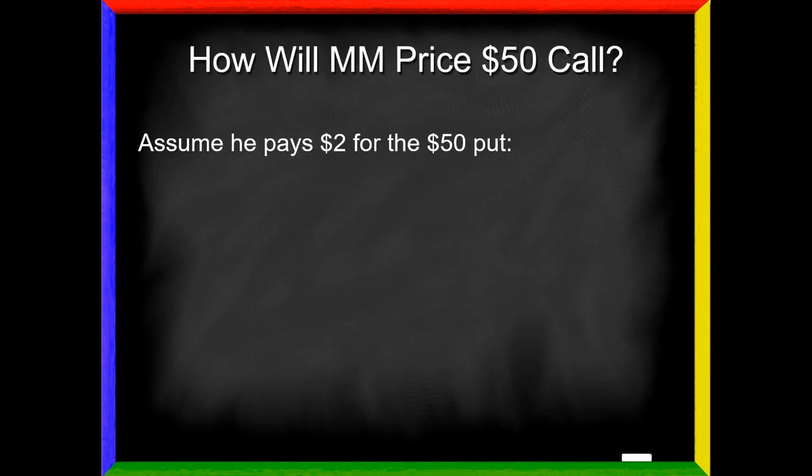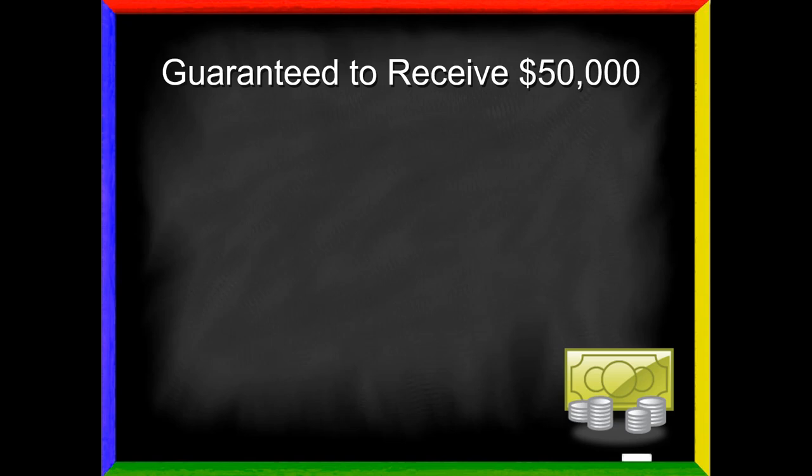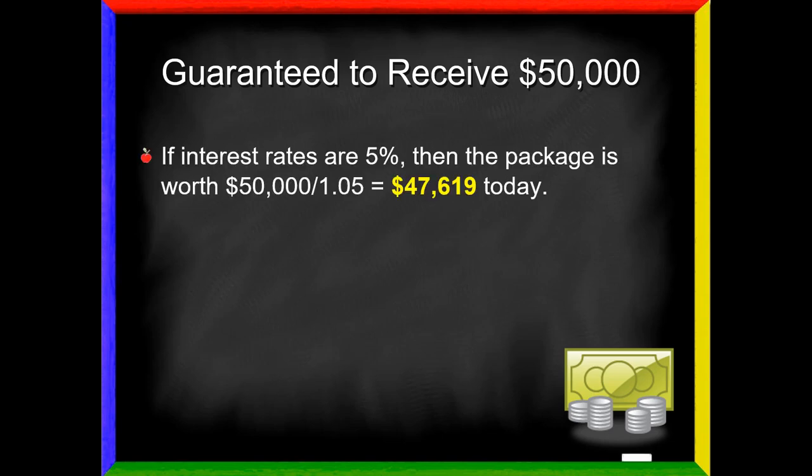Knowing that, how should the market maker price this $50 call? Remember, that was the question we first posed. What is this call option worth? Let's assume he pays $2 for the $50 puts. It doesn't really matter what price he pays, but he has to pay something. We could make up any number and we're still going to come up with our put call parity formula. So I'm just going to pick a number and say it's 2. In this case, he has paid $50,000 for the stock, $2,000 for the 10 puts. Now we're left with the final puzzle piece: what are these $50 calls worth?